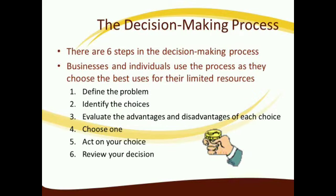The decision making process has six steps. First, define the problem — find out the problem. Second, identify the choice — find the alternatives about the problem or the choice in front of you. Third, evaluate the advantages and disadvantages of the choice — see the merits and demerits. Fourth, choose one — select the best among them. Fifth, act on the choice — execute the plan of action. Sixth, review your decision.